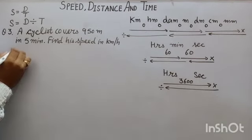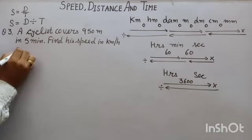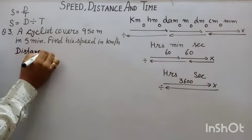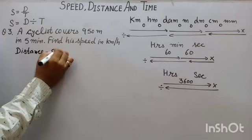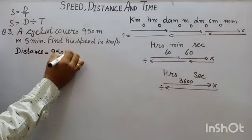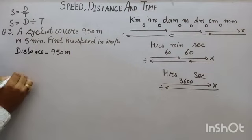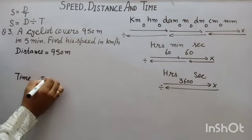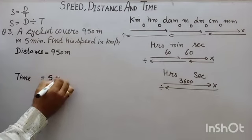Let's start here. Distance is equal to 950 meters. Time is equal to 5 minutes.